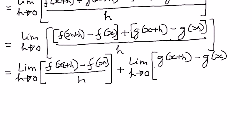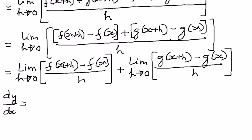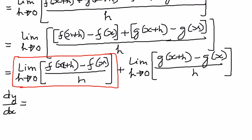So, by looking at this, we can see that dy by dx is going to be equal to: this whole limit — limit of f of x plus h minus f of x divided by h, as h approaches zero. This part of it — isn't that equal to f prime of x? Isn't that the first derivative of the function?